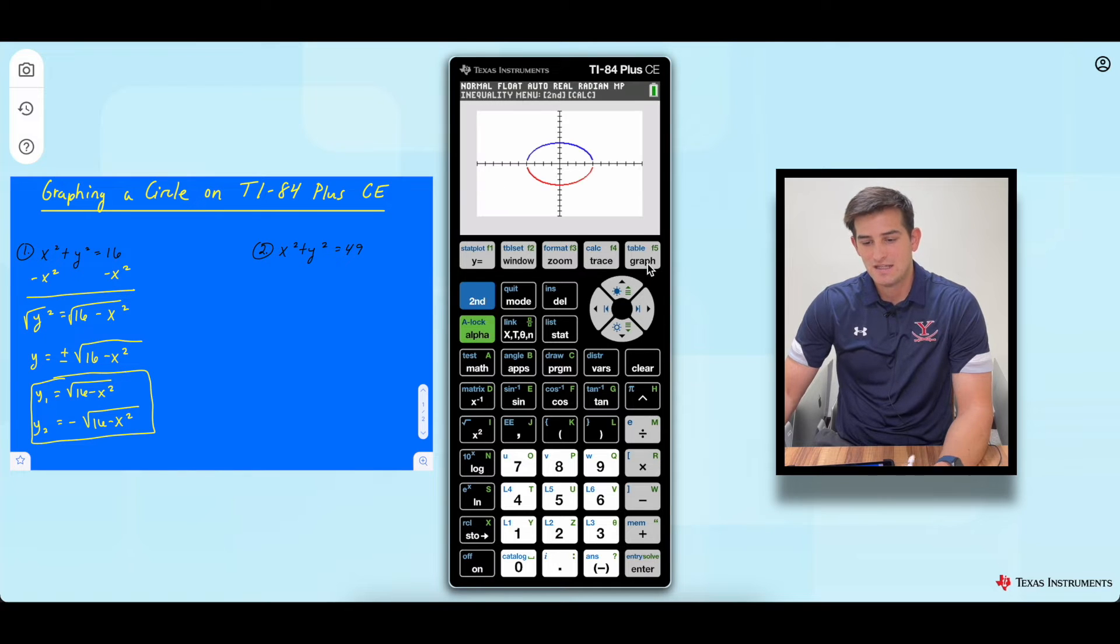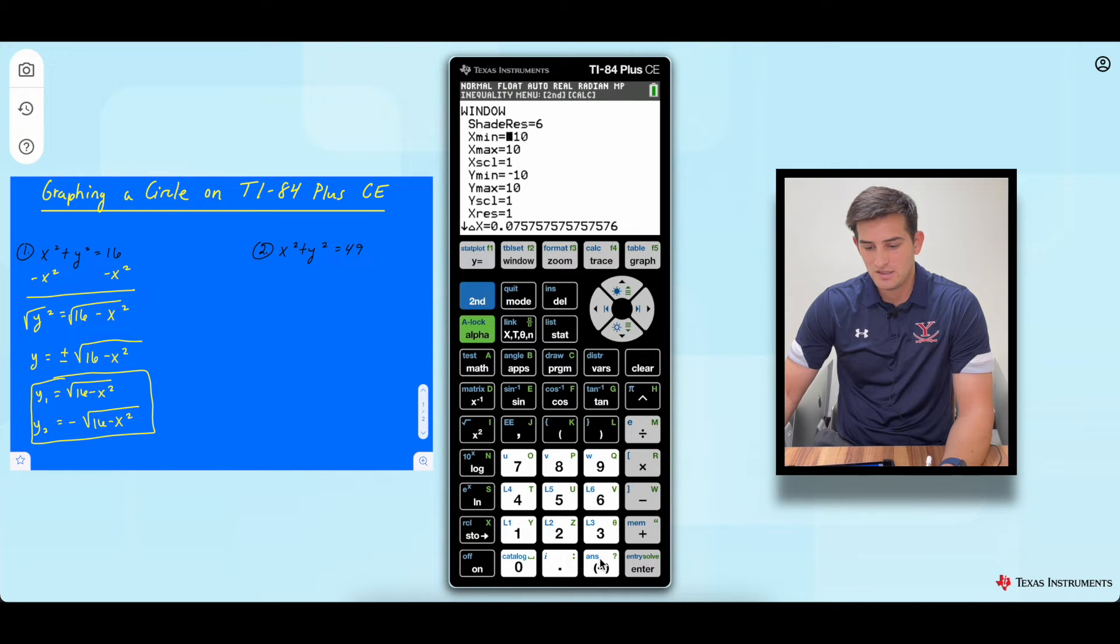Okay. So now we hit graph and notice we have a circle. It doesn't really look like a circle because of our window. So if we adjust our window, let's make x min. So this is like how far left I want to see.